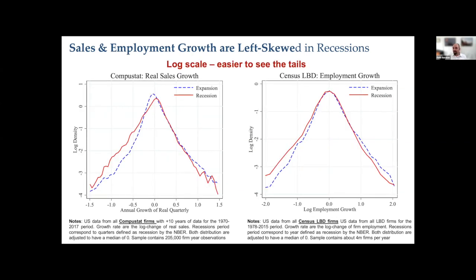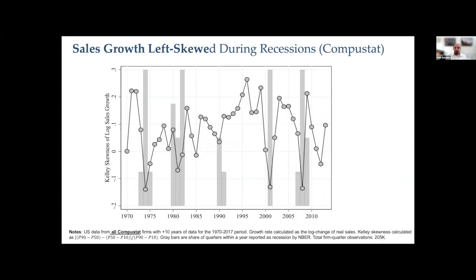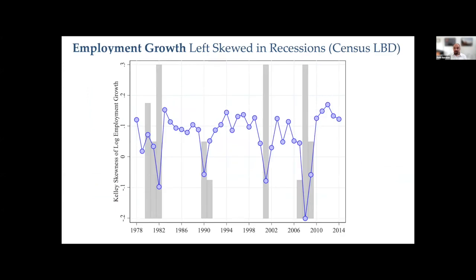In log scale you can see it much more clearly. The probability of a minus-one log shock — a decline in income of roughly 65% — more than doubles in a recession. If you plot the Kelly skewness of employment growth over time, it looks very similar to the sales skewness: like clockwork, in every recession employment growth becomes negatively skewed, the recession ends, and you move back to positively skewed. In the Great Recession you are at minus 0.2 Kelly skewness in 2008, and by 2009 you are back to plus 1.